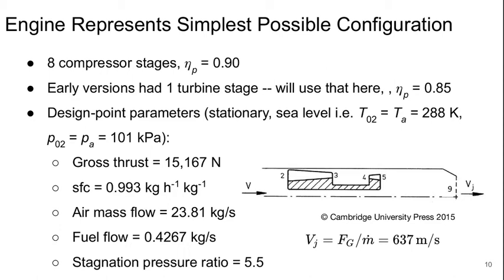A specific fuel consumption of almost 1 kg per hour per kg. The air mass flow rate is about 24 kg a second with about 0.4 kg a second fuel flow. And the overall stagnation pressure ratio is 5.5.